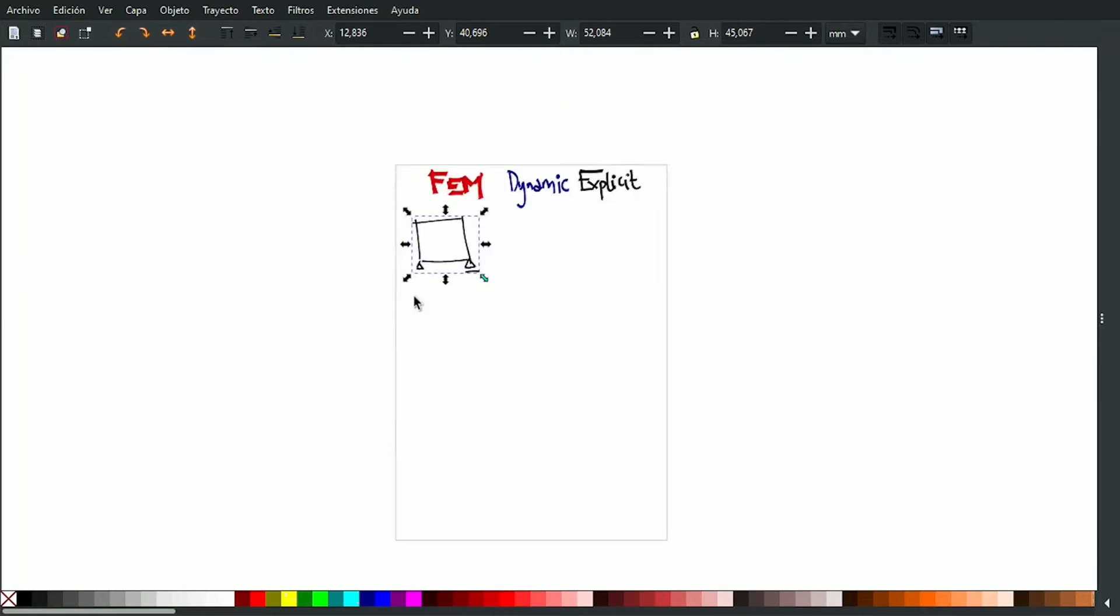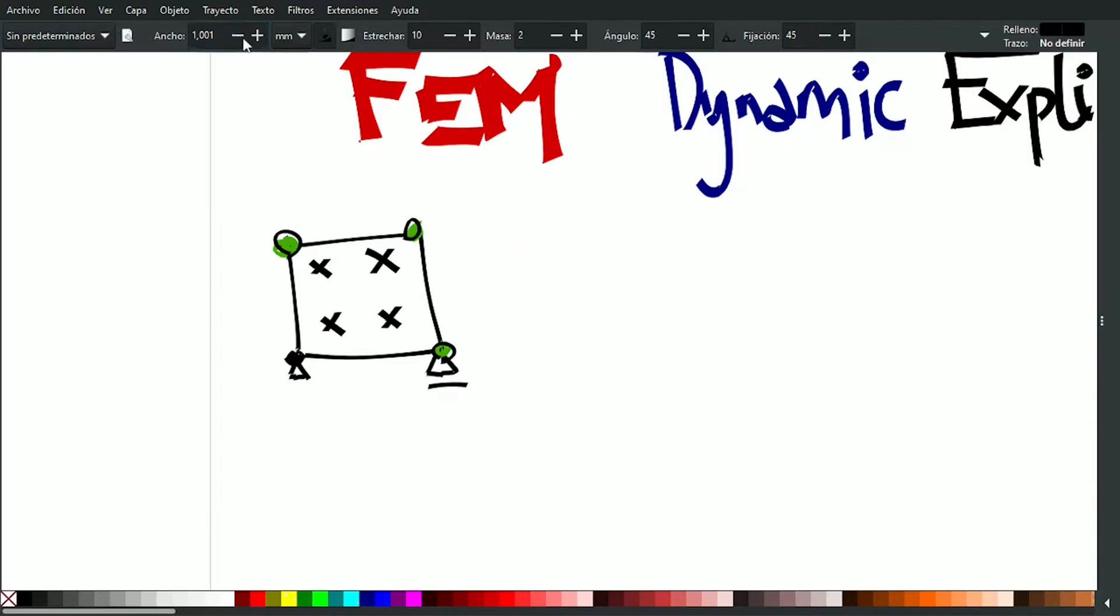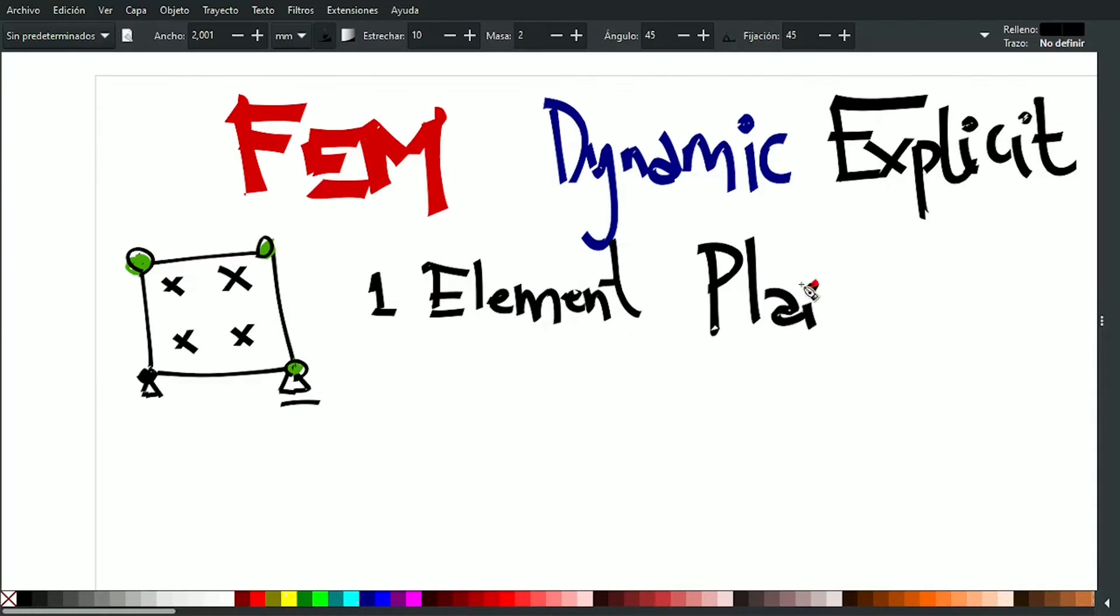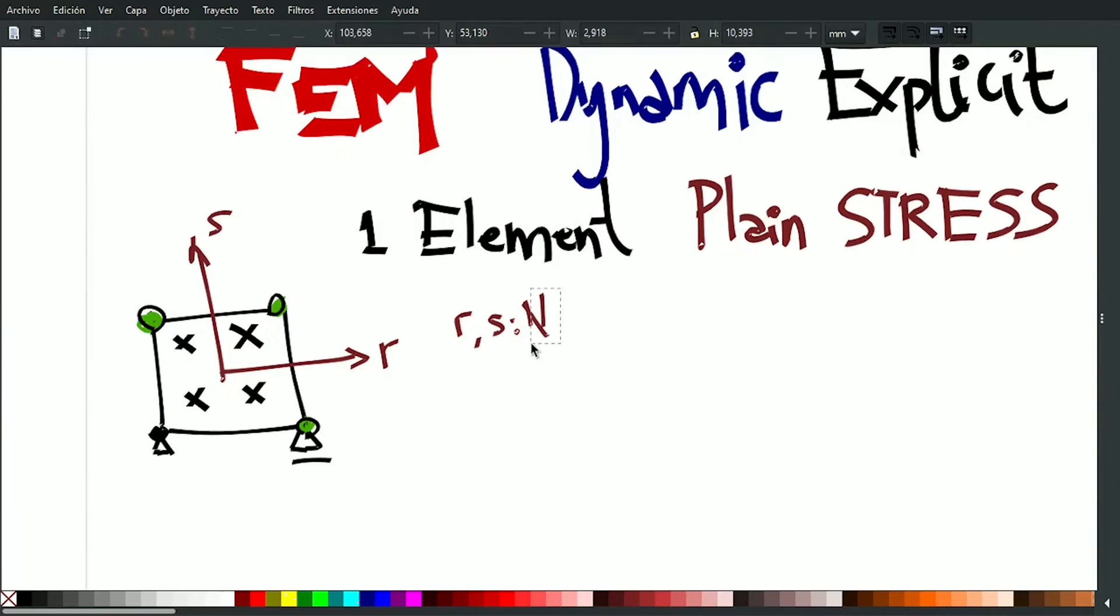The classic solid 2D FEM formulation consists of a 4 node isoparametric element. This is a linear element with 4 nodes and 4 integration Gauss points.